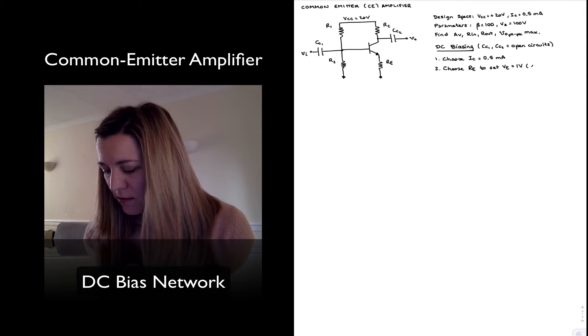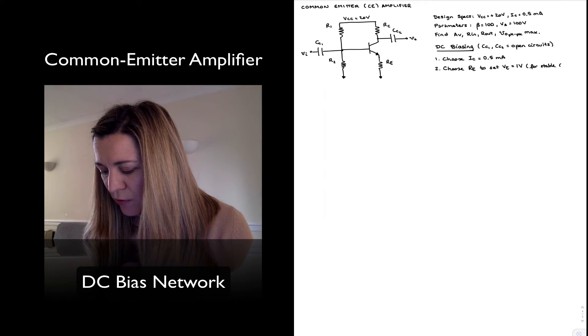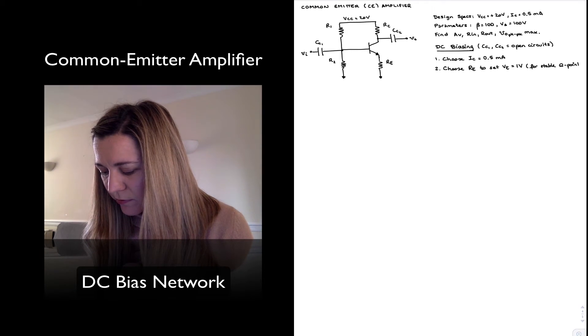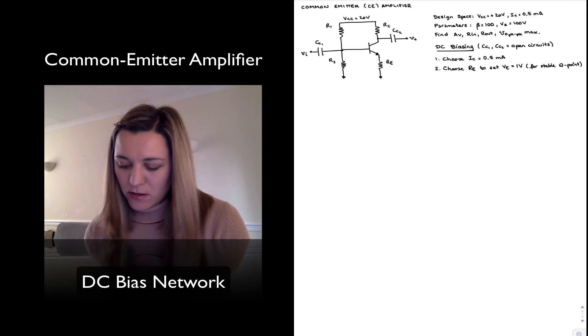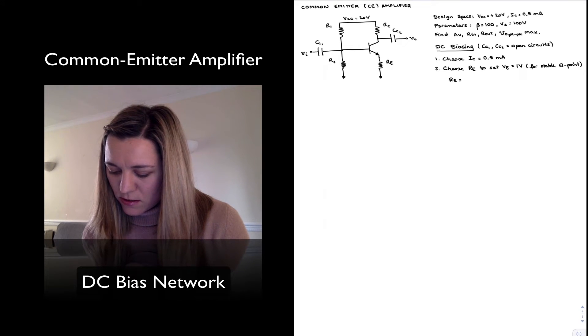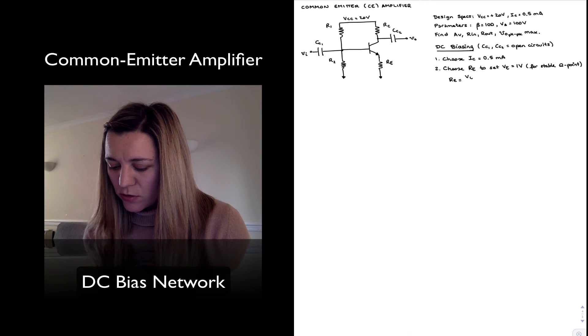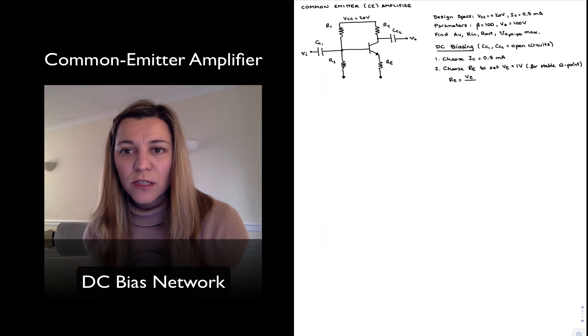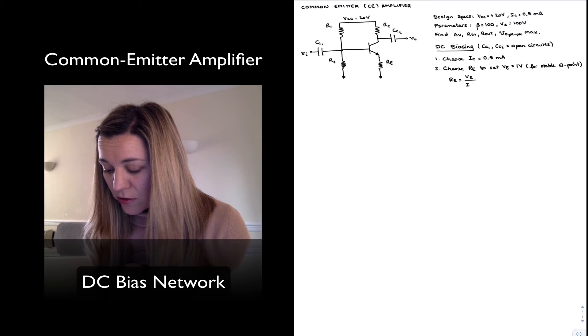So I'm going to choose my value for RE resistor to set VE to one volt. And again, this is to get the beta stable Q point.